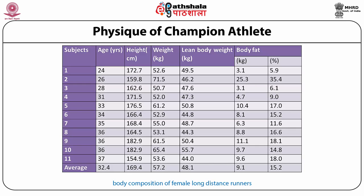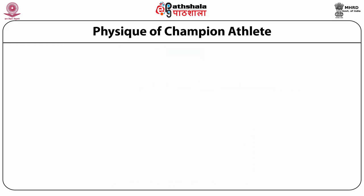Table 3 represents the data for 11 female athletes. The runners' average body fat was 15.2%, which is considerably lower than the value for sedentary females, which is 26%. Runners have lower average fat values than competitive gymnasts, younger distance runners, swimmers and tennis players.